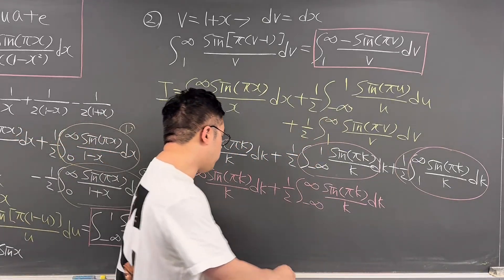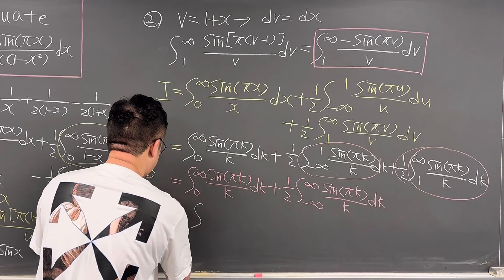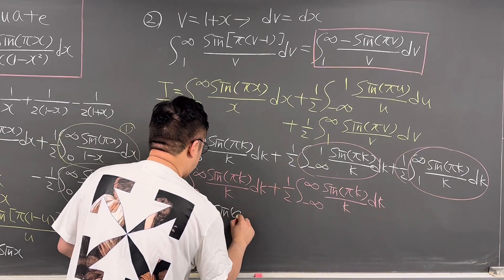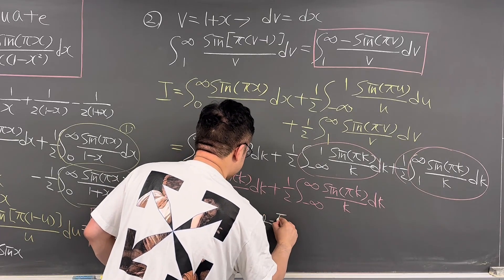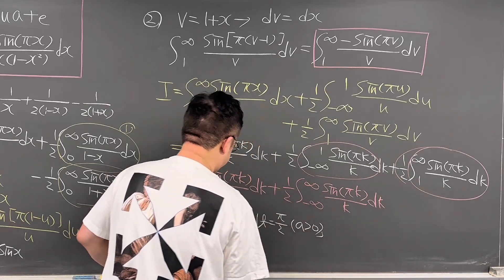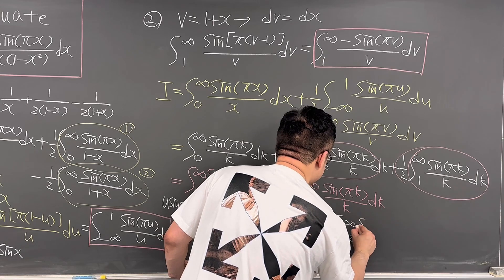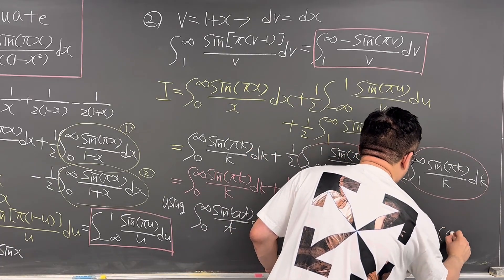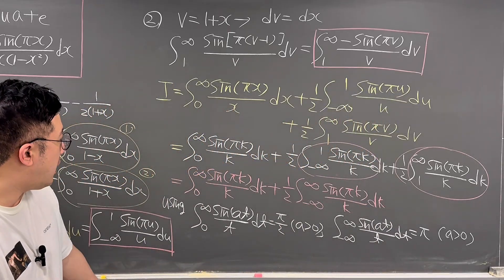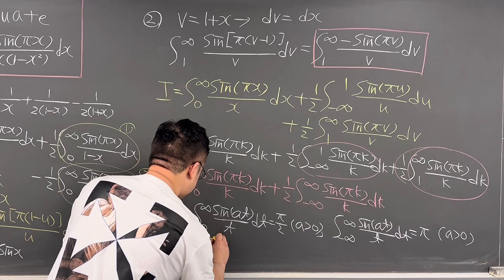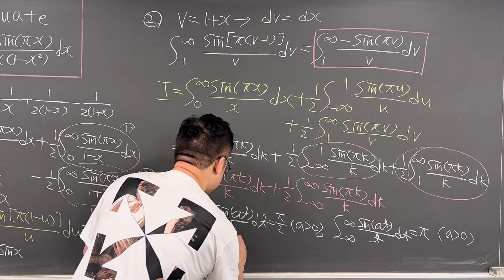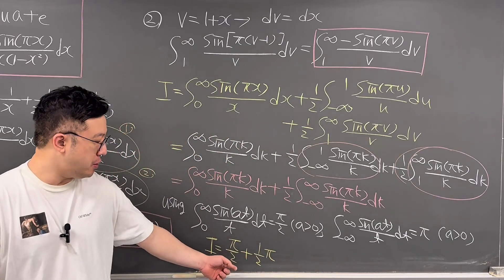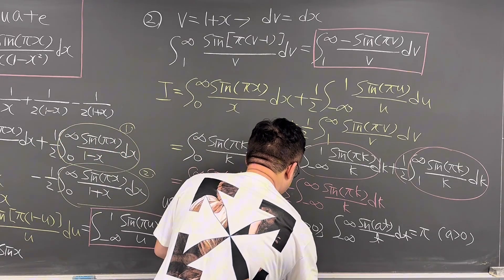Now we can apply the Dirichlet integral formulas. The integral from 0 to infinity of sine(at)/t dt equals π/2 for positive a, and the integral from negative infinity to infinity of sine(at)/t dt equals π for positive a. Therefore, integral I equals π/2 plus 1/2 times π, which gives π/2 plus π/2, and the answer is π.